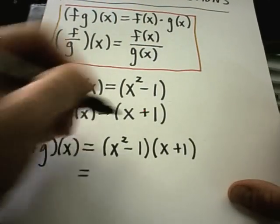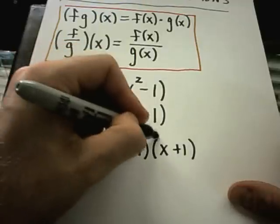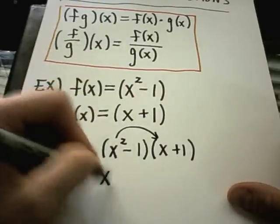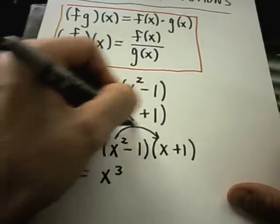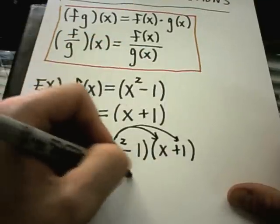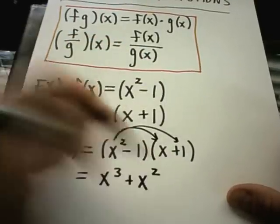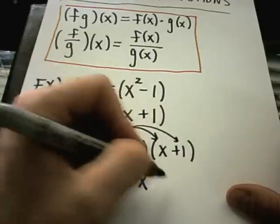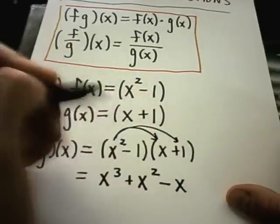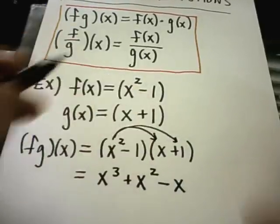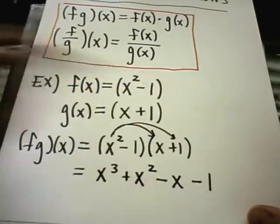And in this case I'm going to have to FOIL it out. So x squared times x will be x cubed. I'll take x squared times positive 1 and get a positive x squared. Negative 1 times x is going to be minus x. And then negative 1 times positive 1 will be minus 1.